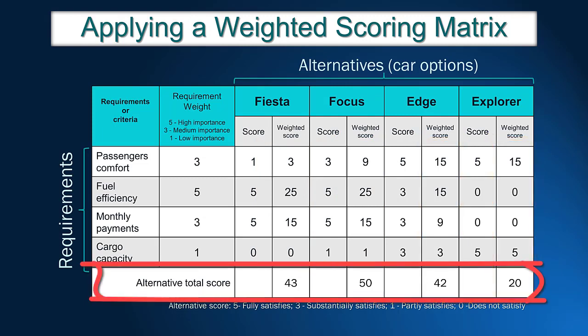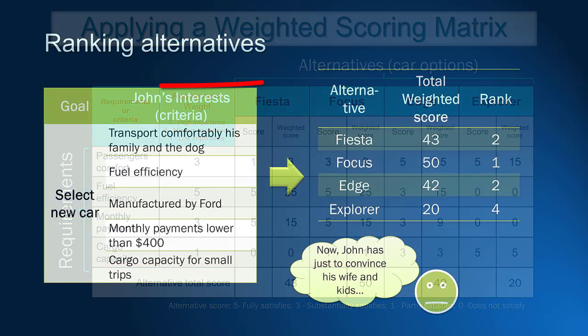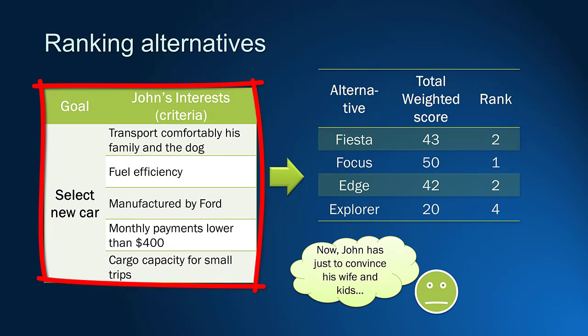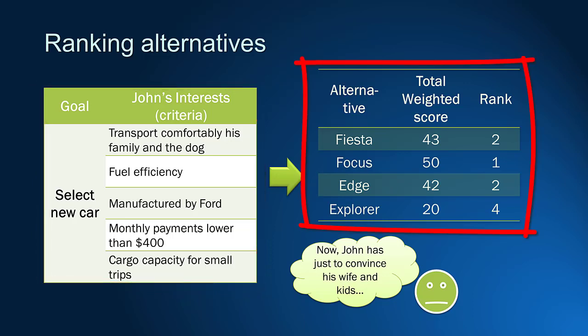It is now possible to have an idea of how suitable the alternatives are for John's requirements. The weighted scoring method translated needs and opinions into weights and scores, which helps to compare alternatives using numerical values. Let's recap: the needs and interests were translated into requirements; the requirements received weights based on the importance level; then the total weighted score was calculated. These made it possible to compare and rank alternatives. In this case, we may assume that the alternative Focus is the most suitable for John's needs.